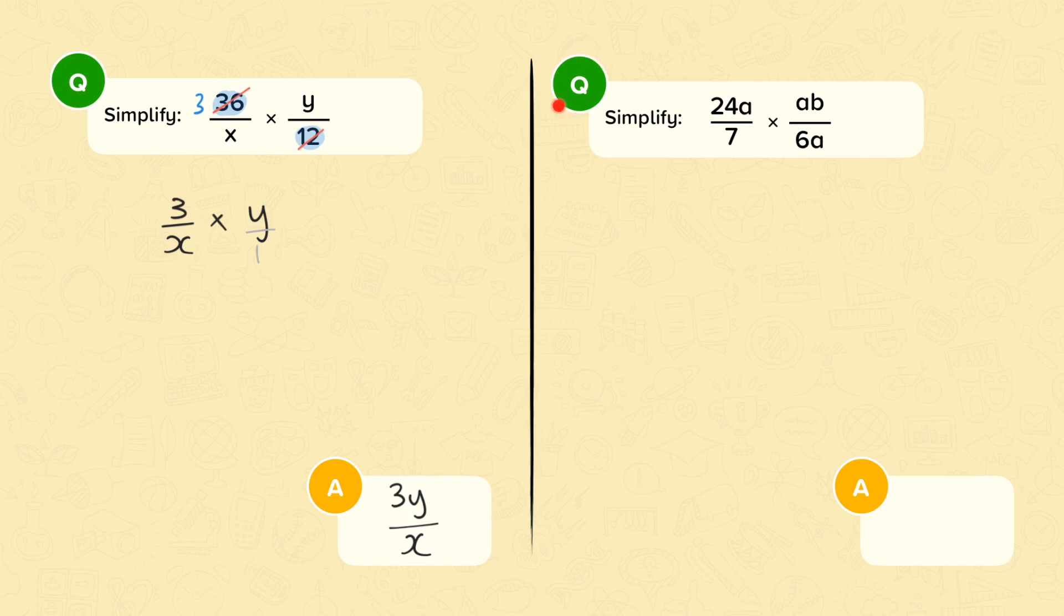OK. Question 2. I'd like you to have a go at this. Before you start, I'm going to give you a hint. Your common factors to cancel out. I want you to look at 24 and 6 and also these a's. OK. Pause the video and when you come back, we'll see how you did. Pause the video now.